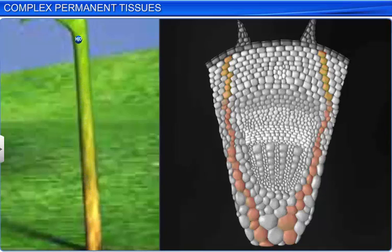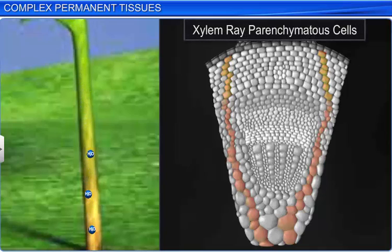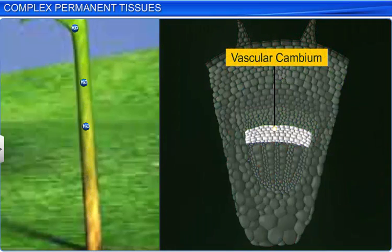Some xylem cells are arranged in the form of a ray through which radial conduction of water takes place. These cells are known as xylem ray parenchymatous cells, and they are produced from the differentiation of vascular cambium.